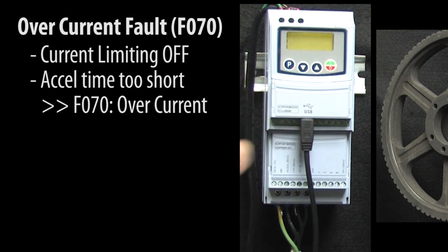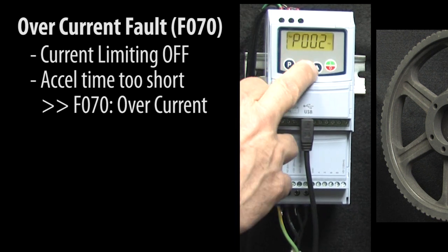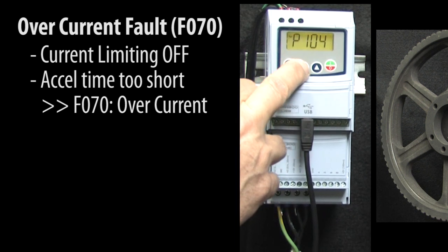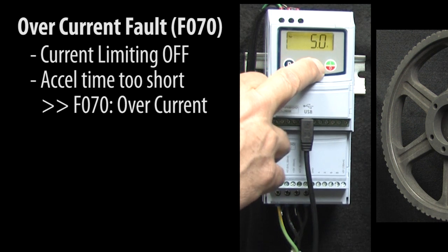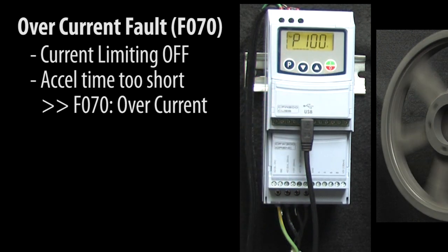So I'll hit run and we immediately get an overcurrent fault. If I clear the fault and extend the ramp time to something reasonable, say 5 seconds, then hit run, everything works great.